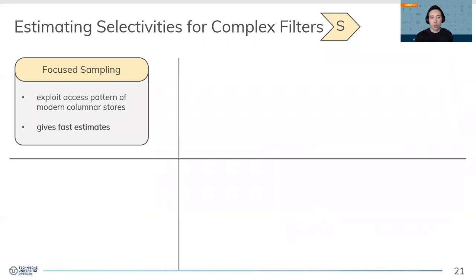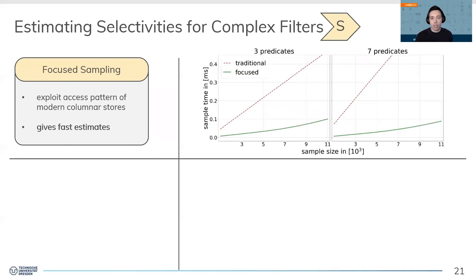Out of these reasons, we propose a customized sampling approach tailored to in-memory columnar stores that gives precise and fast estimates. We can only overview some core ideas here. The first approach we call focus sampling, where we exploit very specific access patterns of in-memory columnar stores. We avoid building up a separate sample table aside from the base table tuples.